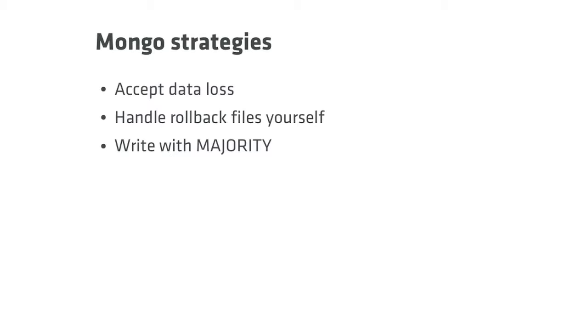If you use MongoDB you can accept more data loss — not all applications need consistency. If you do want it, you can look through the rollback files, assuming they are written successfully. You can also write with write concern majority, which drastically cuts down on the fraction of writes you could lose in a partition — from lots to only a couple. Note that this is going to really slow down your system, because now you have to wait for all these nodes to come back. So the speed advantage that led you to choose MongoDB in the first place might no longer be so compelling.